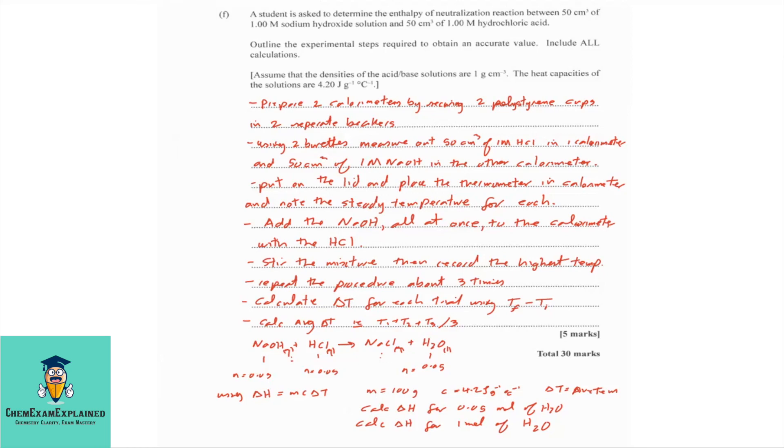In continuing with the calculation, we are going to be using the formula, the heat change is equal to MC delta T, which is M for mass, C for the specific heat capacity, and the delta T is temperature change. The mass given was 100 grams. The specific heat capacity is 4.2 joules per gram per degree Celsius. The temperature change was calculated when we found the average temperature change. The calculation for the enthalpy change for 0.05 mole of water would be calculated, and then you find the enthalpy change for one mole of water.